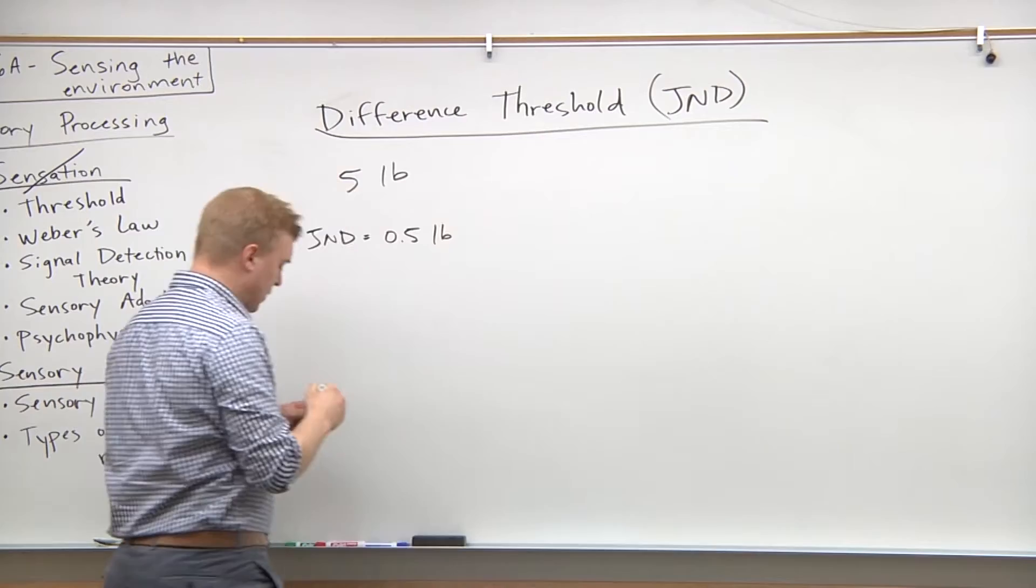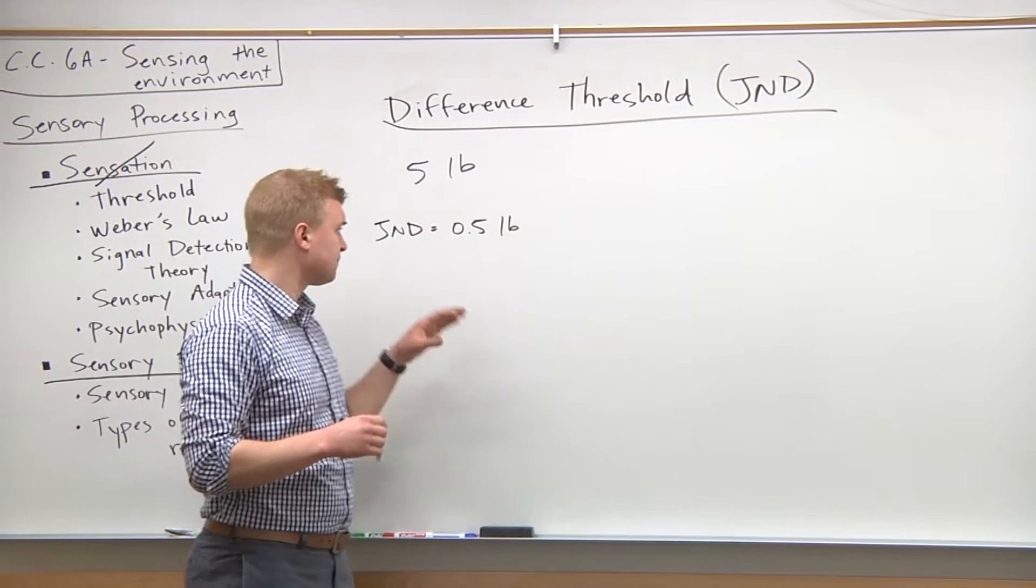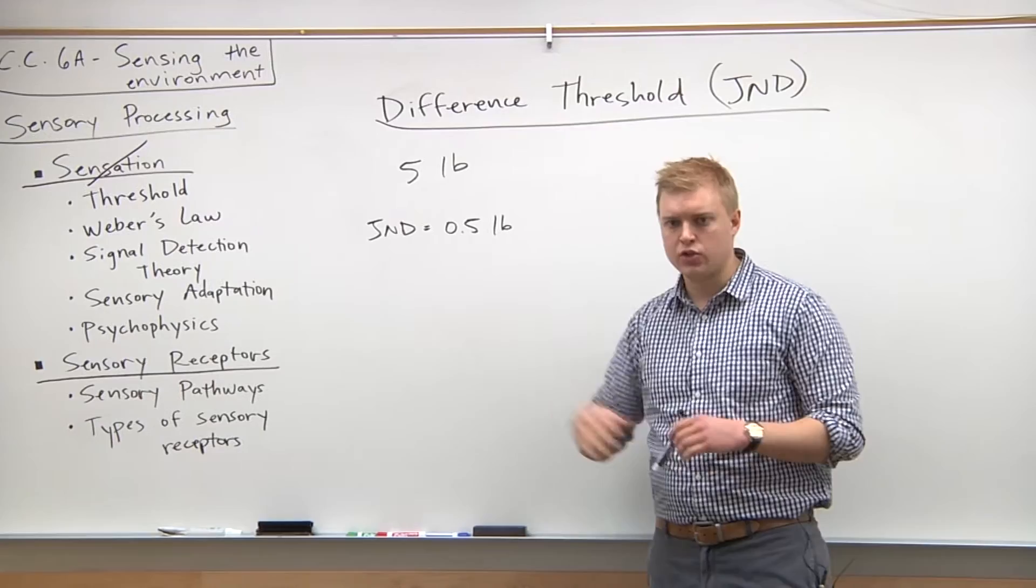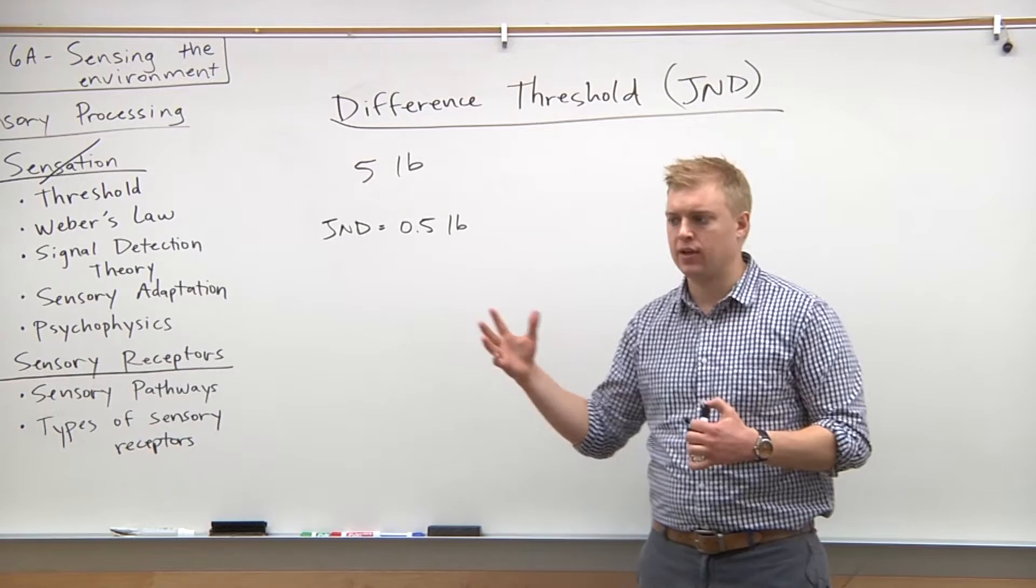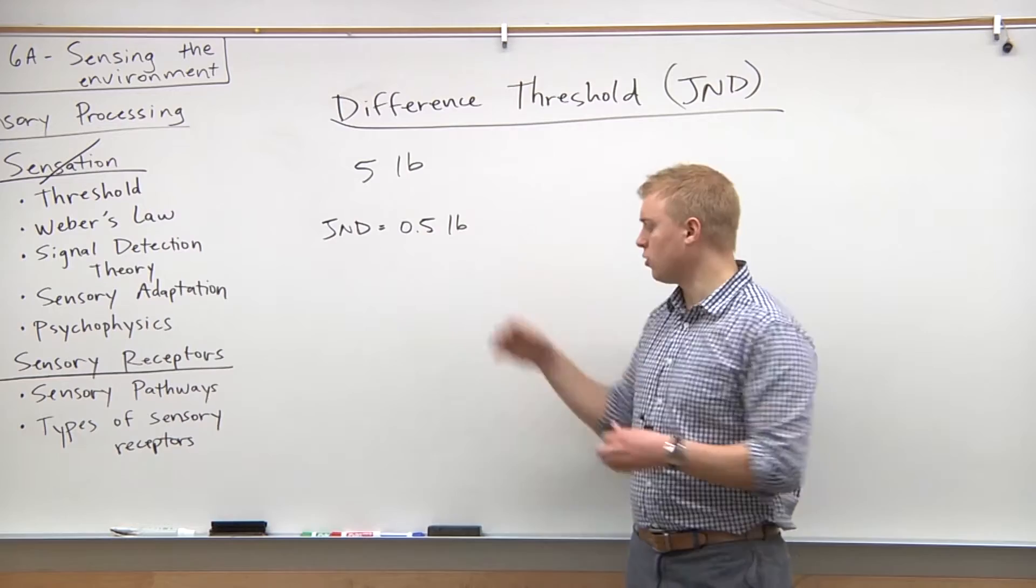The difference threshold is also related to noticing the difference 50 percent of the time, similar to what we did with the absolute threshold. The point I want to make here is with the JND, it will increase as your initial stimulus increases. So for an 80 pound weight, if you gave me an 80.5 pound weight I would not notice that difference, at least not half the time.